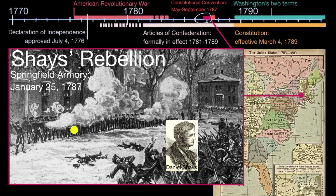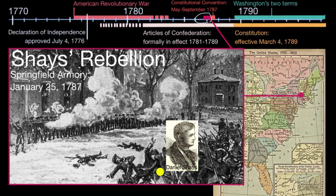Eventually, on January 25th, 1787, we see things coming to a head where Daniel Shays is leading his rebels to take the armory in Springfield, Massachusetts, which is in Western Massachusetts, but it's stopped by a militia. This is a militia paid for by merchants in the area who wanted their debts paid, or just wanted functioning courthouses, or did not want all of these rioting farmers and former veterans. And so this rebellion is put down, but it shows the weakness inherent in the Articles of Confederation.